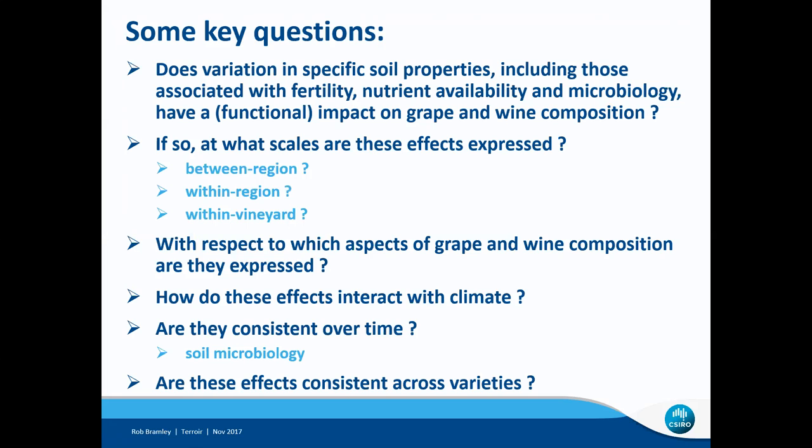If the sub-regionalisation is consistent across different varieties, that strikes me as pretty helpful in terms of understanding terroir. But if the sub-regionalisation with respect to Chardonnay is quite different to Shiraz, then I would seriously question the value of pursuing that sub-regionalisation — even from a marketing perspective — because clearly, if there isn't consistency in biophysical impact across different wines, that makes something already complicated far more complicated and arguably of little value to pursue.